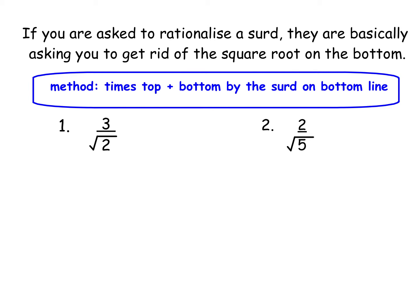So because this one has a root 2 in the bottom, I write times root 2, times root 2 because essentially root 2 over root 2 would just be 1. So I'm timesing it by an equivalent fraction to 1 but the nature of the timesing by root 2 helps undo the surd.